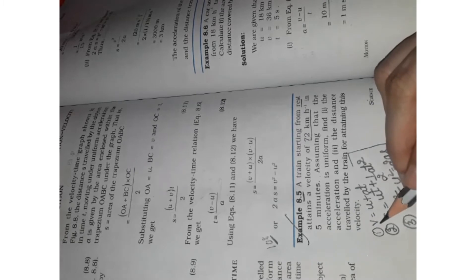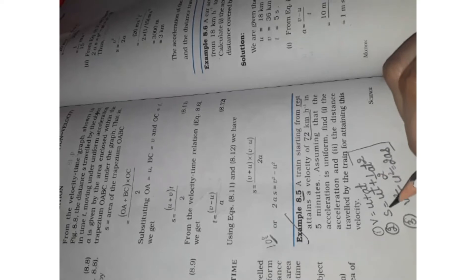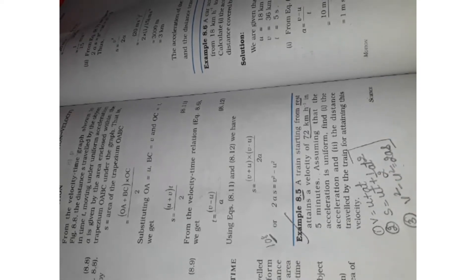Now what is v is the final velocity, u is the initial velocity, a means the acceleration, s means the distance. The rest of the terms are all you know. Now we will read the statement and solve the numerical.